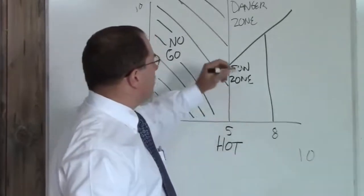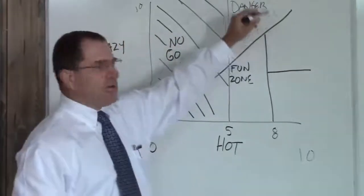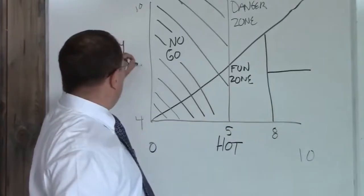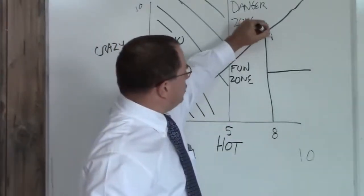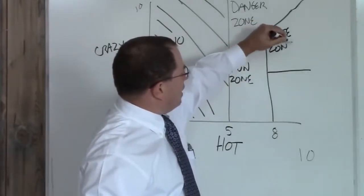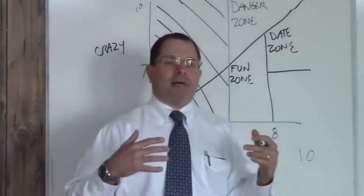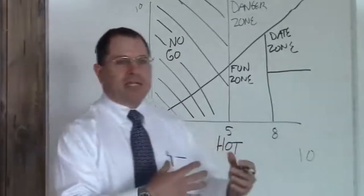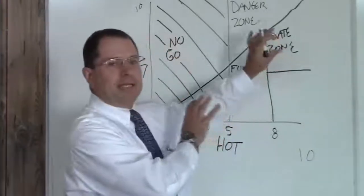Now moving on, you have this zone here. This is below the crazy line, above an eight hot but still about a seven crazy. This is your date zone. You can stay in the date zone indefinitely. These are women that you introduce to your friends and your family. They're good looking and they're reasonably not crazy most of the time.